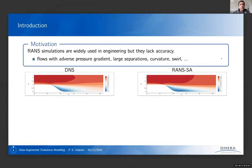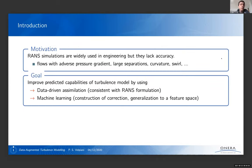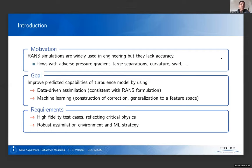So we all know that RANS simulations, they lack accuracy in many situations. For instance, when you have adverse pressure gradient, large separations, curvatures, and so on. This image shows on the left, the DNS of a backward facing step flow. And on the right, we have the RANS with the Spalart-Allmaras model. And we see that in this situation, the RANS overpredict the separation length. And our goal is to try to fix this problem, to fix the RANS solutions to get it closer to the DNS. And we're going to do this by combining data assimilation and machine learning.